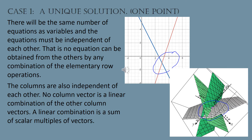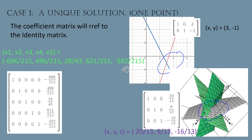For example, if I take two times column vector one, plus five times column vector two, minus 17.3 times column vector three, I'm creating a linear combination of the column vectors. If there is only a unique solution or one point, the coefficient matrix is made up of independent column vectors, and when you apply all of the elementary row operations and completely row reduce it to its row reduced echelon form, you will always obtain the identity matrix.